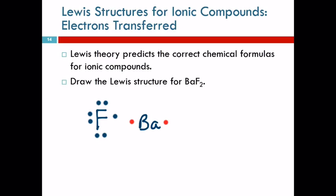So the barium's like, hey, I've got two valence electrons I need to ditch — will you take them? And the fluorine's like, I could take one for you, but I don't have room for two, I only need the one. So this electron gets moved over to the fluorine. That gives fluorine a negative one charge. Barium lost one electron, so its charge is positive one.